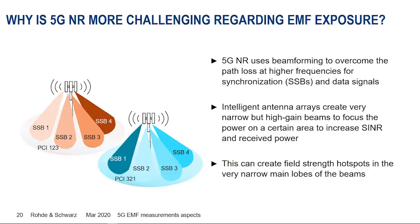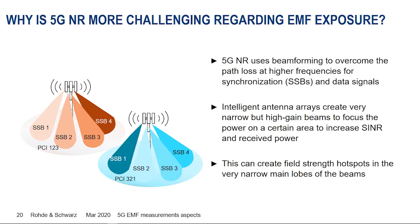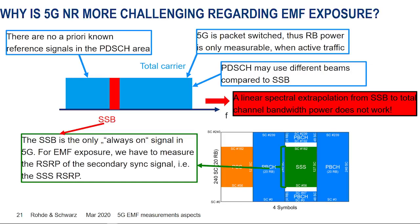Why is 5G challenging in terms of EMF exposure? First, 5G offers beamforming — directive antennas pointing in certain directions. Second, and this is a big challenge: we no longer have a reference signal spread over the entire channel bandwidth. The only always-on signal in 5G is the SSB — the synchronization block — which has a 240 sub-carrier bandwidth, narrow compared to the entire 5G channel bandwidth. The traffic in resource blocks besides the SSB depends on the traffic situation, so we cannot do a simple linear extrapolation from SSB bandwidth to the entire channel bandwidth.